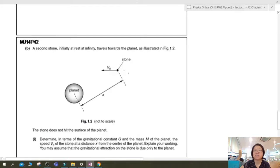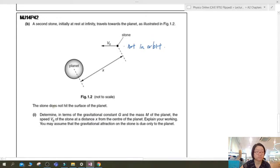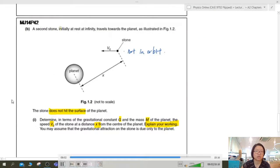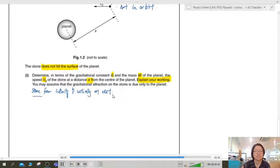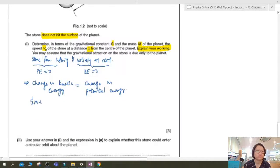Anyway, the second stone initially at rest at infinity. This is obviously not in orbit. Travels towards the planet. The stone does not hit the surface of the planet. Determine, in terms of the gravitational constant and the mass m, the speed v0 of the stone at the distance x from the center of the planet. Explain your working. So normally when they draw like this, students panic because you are used to it being a straight line. Then you rotate the paper a bit. Then it's a straight line. Because when we measure distance, we have to measure from the center of the planet. So explain your working. So I can say that the stone is from infinity and is initially at rest. Because the stone is from infinity, the potential energy is zero. Initially at rest, then the initial KE is zero. So because of this, I can say that the change in kinetic energy will be equal to the change in gravitational potential energy.